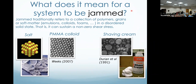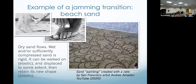Since this is a general interest talk, it behooves me to start out by saying, to zeroth order, what does it mean when a system is jammed? Jammed traditionally refers to a situation in which there is a collection of entities — polymers, food grains, bubbles — which are in a disordered solid state. That is, it can sustain a non-zero shear stress, but not be in a regular crystal like salt or a PMMA colloid, but rather be like a foam in shaving cream where you can poke it and it will retain its shape if you poke it gently. You can poke it aggressively and induce plastic deformation, and if you're artistic enough, you can create these beautiful sand paintings as were done by artist Andres Amador.